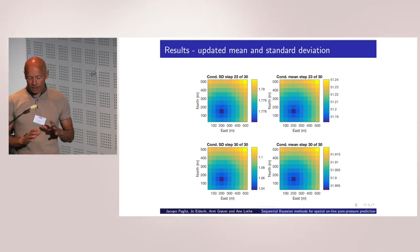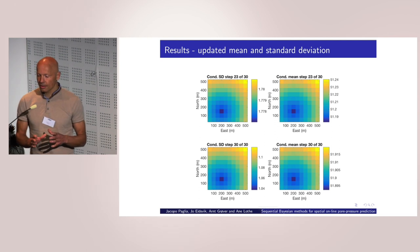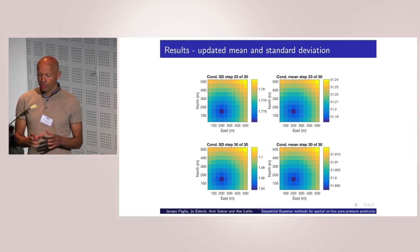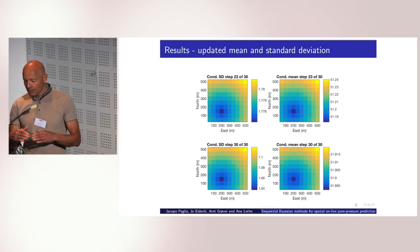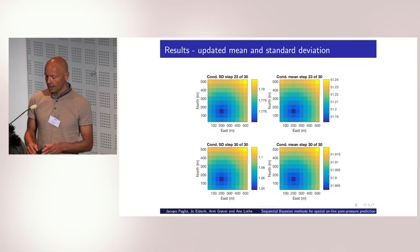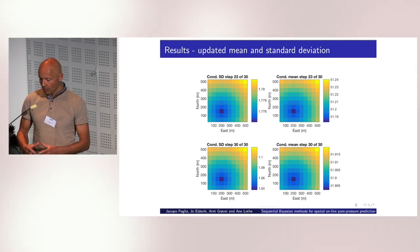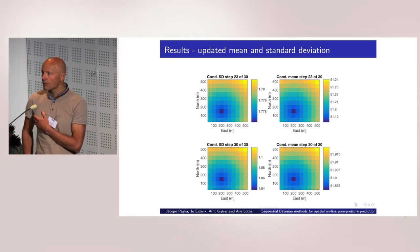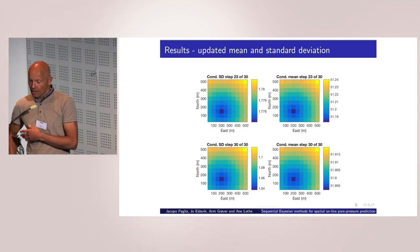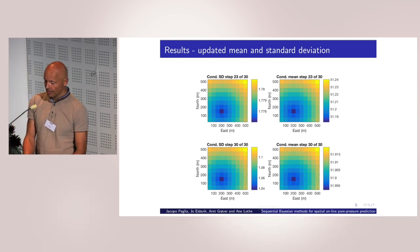So here's just a screenshot as we go along. So this is at step 23 of the updating, of the sequential updating, that's at the top. And then at the bottom step, step 30 of the assimilation. And you see the scales are different here. So there's clearly a reduction in the standard deviation as you go deeper, as you get closer to the location you want to predict in this case. And there's also a shift in the prediction, in the prediction mean. So you see that the mean changed from 51.2 to 51.9 in the right column.